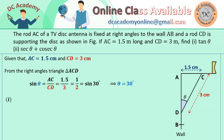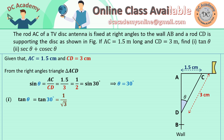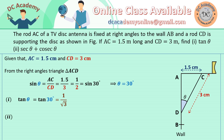tan theta means we need to calculate tan 30°, and we all know that tan 30° is 1 by root 3.